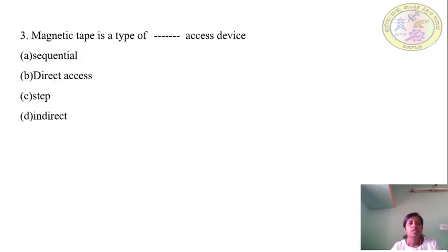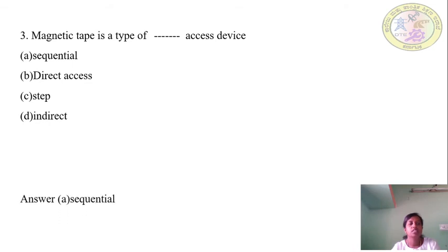Question 3: Magnetic tape is a type of blank access device. Options: A. Sequential, B. Direct access, C. Step, D. Indirect. Answer: A — Sequential.